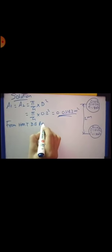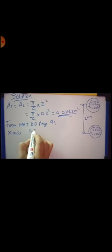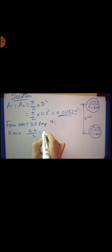From HMD data book page number 91, x-axis that is diameter by distance, that is 4 into 2 divided by 2. So, take it to 0.1 and choose curve 1 for disk. Therefore, F12 is equal to 0.01.